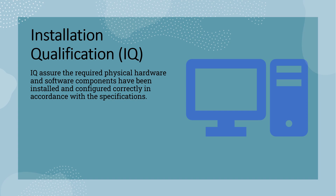So the installation and configuration of the hardware and software should be done in such a way that whatever the command we are giving from the software, the hardware takes that command and executes that process for each and every individual function. So whatever function is available with the software and configured with that hardware, exactly the hardware will take that command and execute that process.